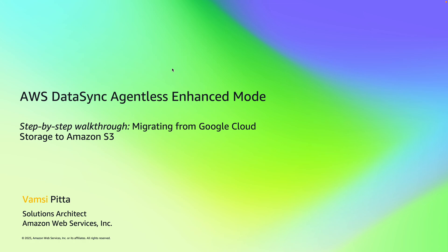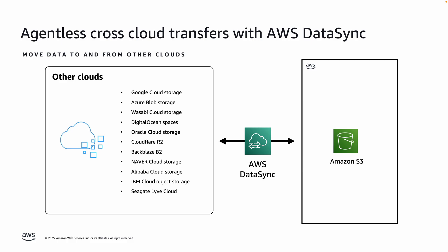Hello everyone. My name is Vamsi Pitta. I'm a solutions architect at Amazon Web Services. In this video we'll see a step-by-step walkthrough of migrating data from Google Cloud Storage to Amazon S3 using AWS DataSync agentless enhanced mode. The new AWS DataSync agentless enhanced mode can be used for cross-cloud transfers from all S3-compatible cloud providers. It provides a seamless way to transfer the data without having to manage any of the underlying infrastructure.